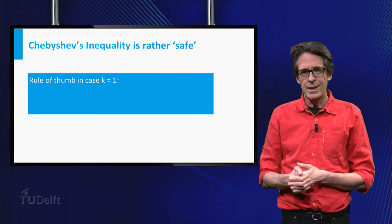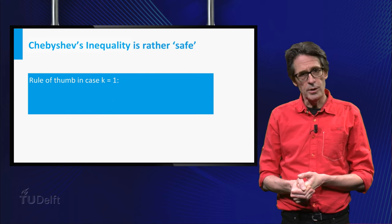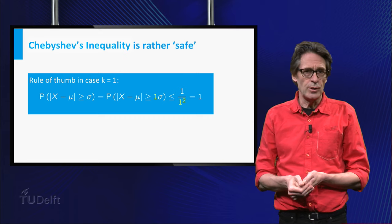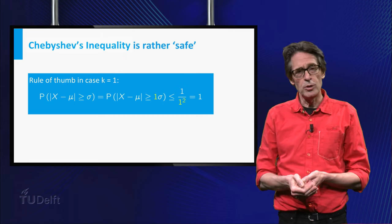To illustrate this point, if k is 1, the inequality states that a certain probability is at most 1. This is certainly true, but it does not give us much information.